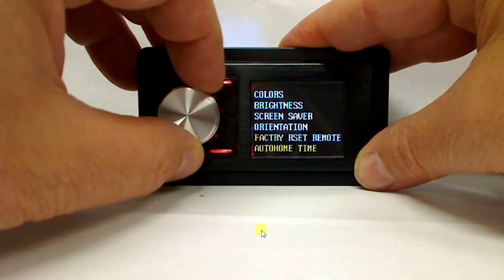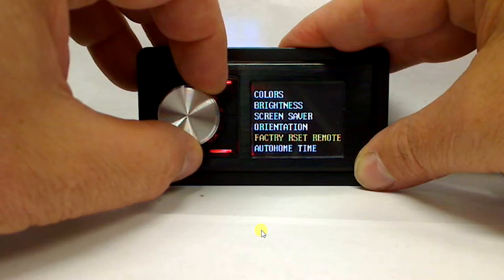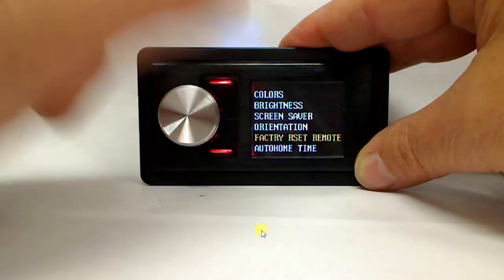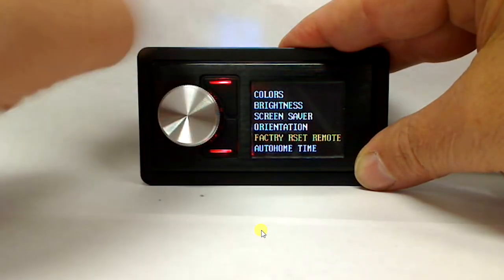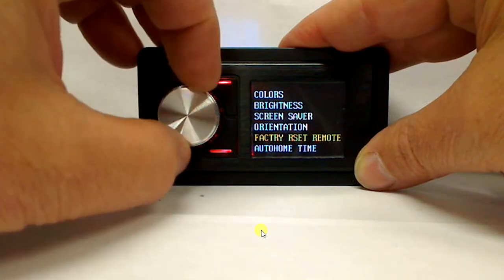Now we're going to come back here and we're going to go to factory reset remote and you can click on that and that'll actually reset all the settings on the remote back to the default settings.